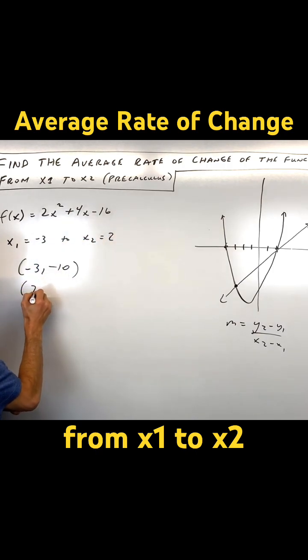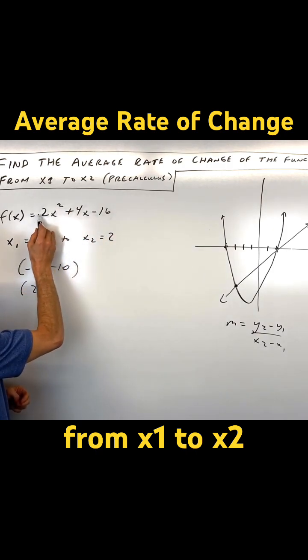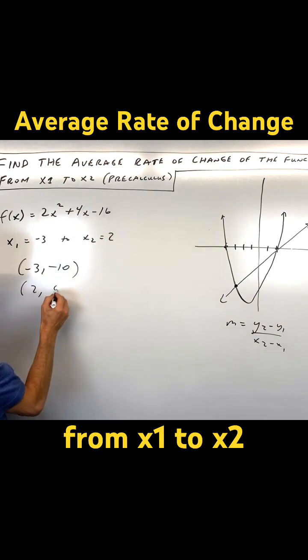And if we put 2 in for x, we get 2 squared is 4 times 2 is 8, plus another 8, which is 16, minus 16 is 0.